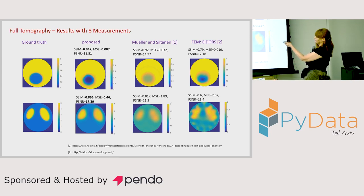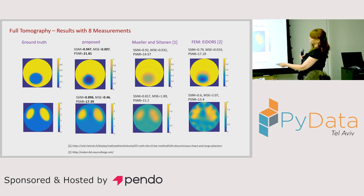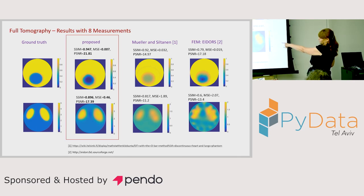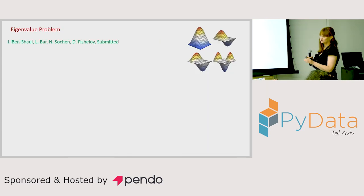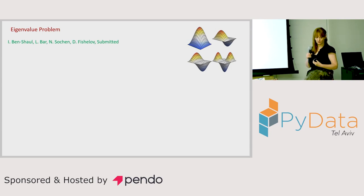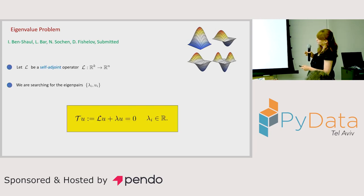Here we can see the results: the left column is the ground truth, next is our reconstruction, and we compare with two other methods. Since I don't have enough time, I'll briefly mention that this approach is also good for eigenvalue problems — finding the eigenfunction of some differential operator.